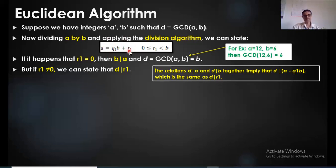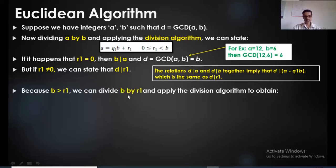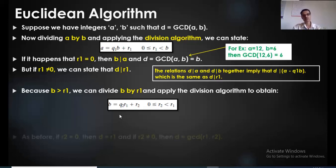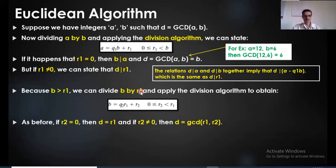In the next step of the Euclidean algorithm, assuming R1 is not equal to 0, since B is greater than R1, we divide B by R1. From the division algorithm: B = Q2·R1 + R2. If R2 equals 0, then R1 itself is the GCD, so D = R1. If R2 is not equal to 0, we must continue and find the GCD between R1 and R2.